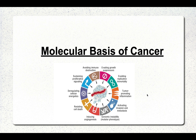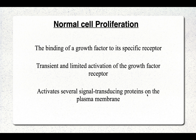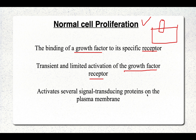In this video we will discuss the molecular basis of cancer. Before understanding that, let's understand normal cell proliferation. Whenever a normal cell proliferates, there is a growth factor which binds to a specific receptor, causing activation of that growth factor receptor. There will be a growth factor receptor on the cell, and the growth factor binds to it.